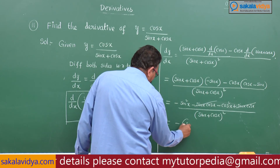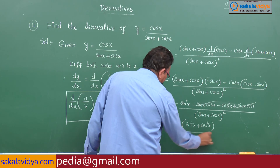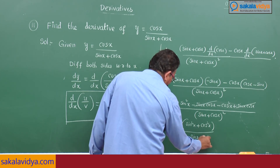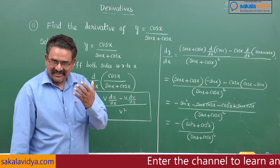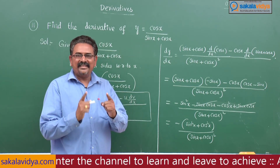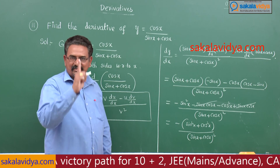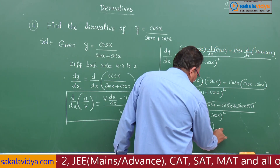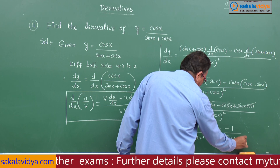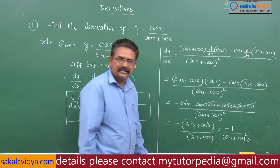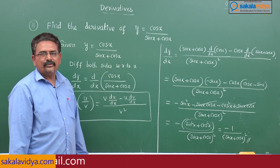If you take minus common, you get sin square x plus cos square x all over sin x plus cos x whole square. Have you recollected any formula? Yes — the very important trigonometric identity: sin square x plus cos square x equals 1. Therefore this can be written as minus 1 by sin x plus cos x whole square. Since sin square x plus cos square x equals 1, that is the final answer.